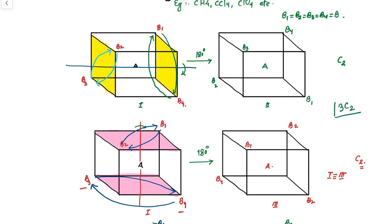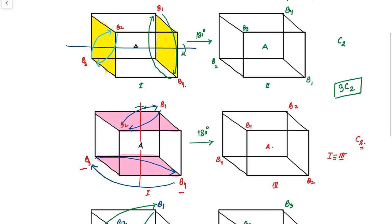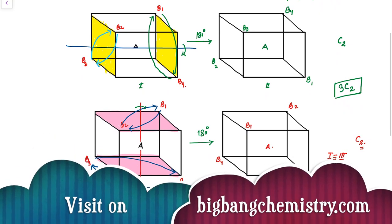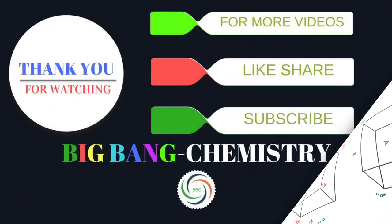I hope that everyone understood how the perfect tetrahedral molecule has 3C2 proper axes of rotation. For more videos, please share and subscribe to my channel. Thank you very much.